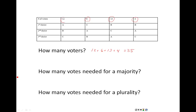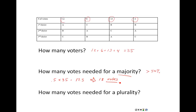The next question asks how many votes are needed for a majority. Remember, a majority means more than 50%. So let's figure out what 50% of 35 is: .5 times 35 equals 17.5. The number required to guarantee a majority would be 18 votes, because we round up to make sure we exceed 50%.